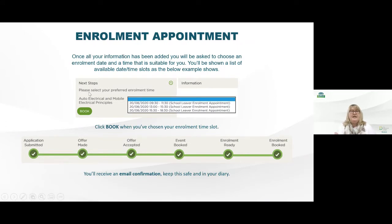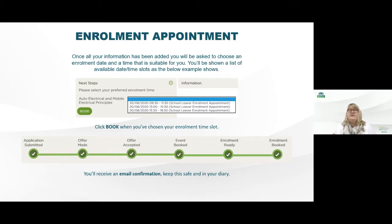Once you've completed that you'll then be taken back to the front screen, as you can see here, and you're then into the next steps to book your preferred enrolment time. You'll see there are a number of slots — you can book a slot between 9:30 and 11, which will mean you'll receive a call between 9:30 and 11:30 from your tutor to finalise your course and any other questions you may have.